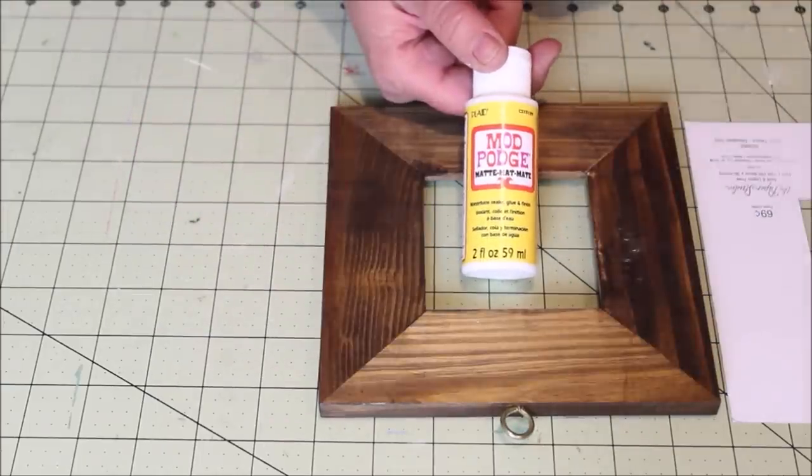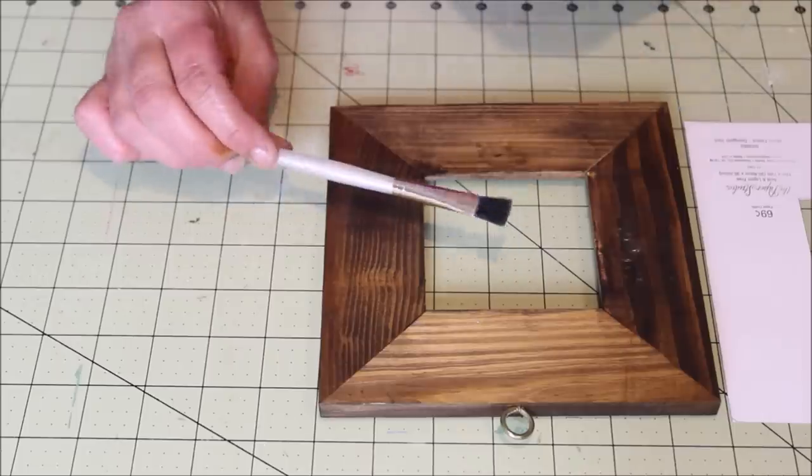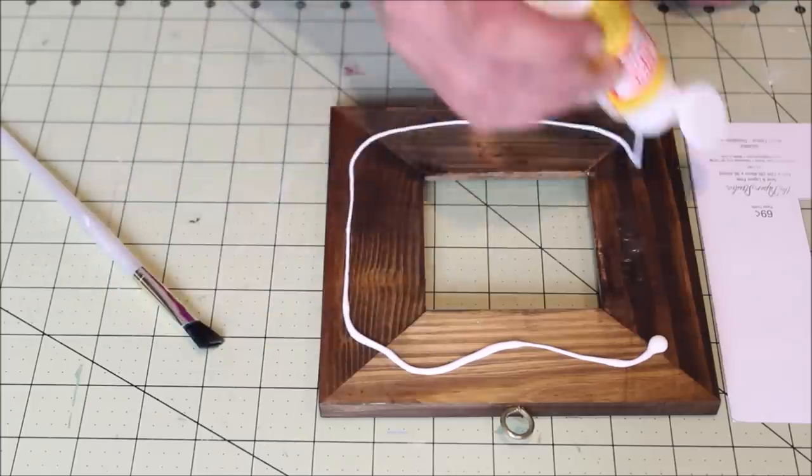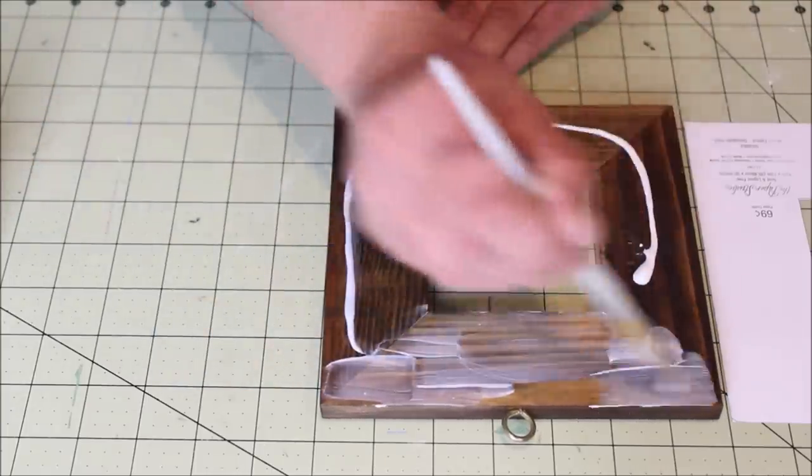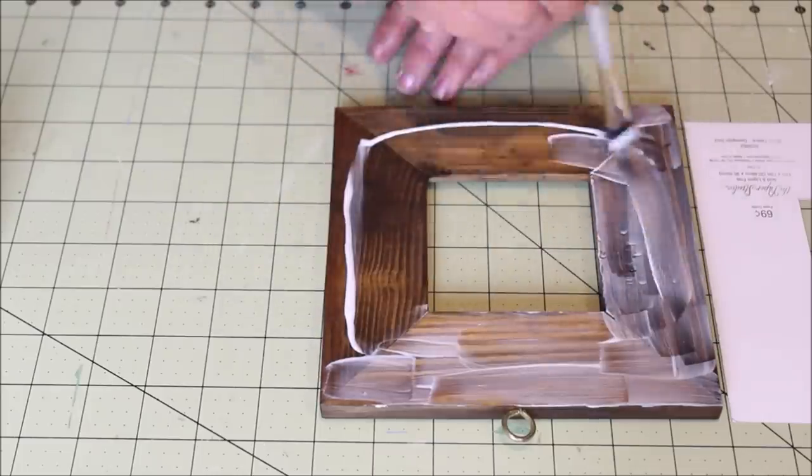Next, I needed some Mod Podge and I am using some with a satin finish and a small paintbrush. I drizzled the Mod Podge directly onto the frame and used the brush to smooth it out evenly over the whole surface.